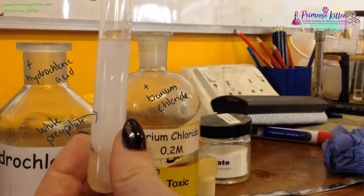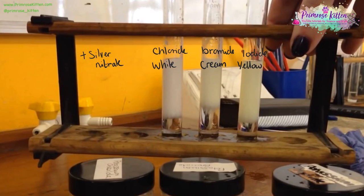If you want to test a sample to see if it contains sulfate ions, you need to add hydrochloric acid, you need to add barium chloride, and if it contains sulfate ions, you will get a white precipitate formed.